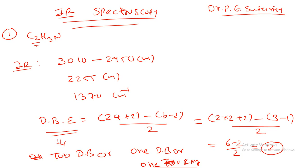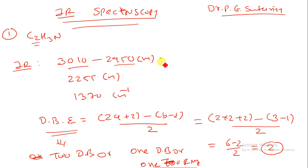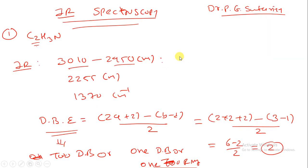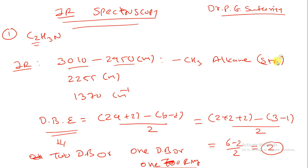Now, the peaks at 3010 and 2950 cm⁻¹ correspond to aliphatic stretching — that is alkane aliphatic stretching. So CH3 may be present; write down CH3 alkane stretching.